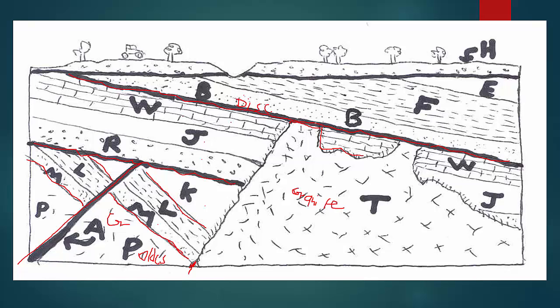Now, after this unconformity, we've got layers B, F, and E. And as you can see, there is another unconformity up here. And these layers are coming up with an angle right here. So, this here is another angular unconformity. So, this is an angular unconformity. And then you've got H, the very last layer, which is the youngest in this case.